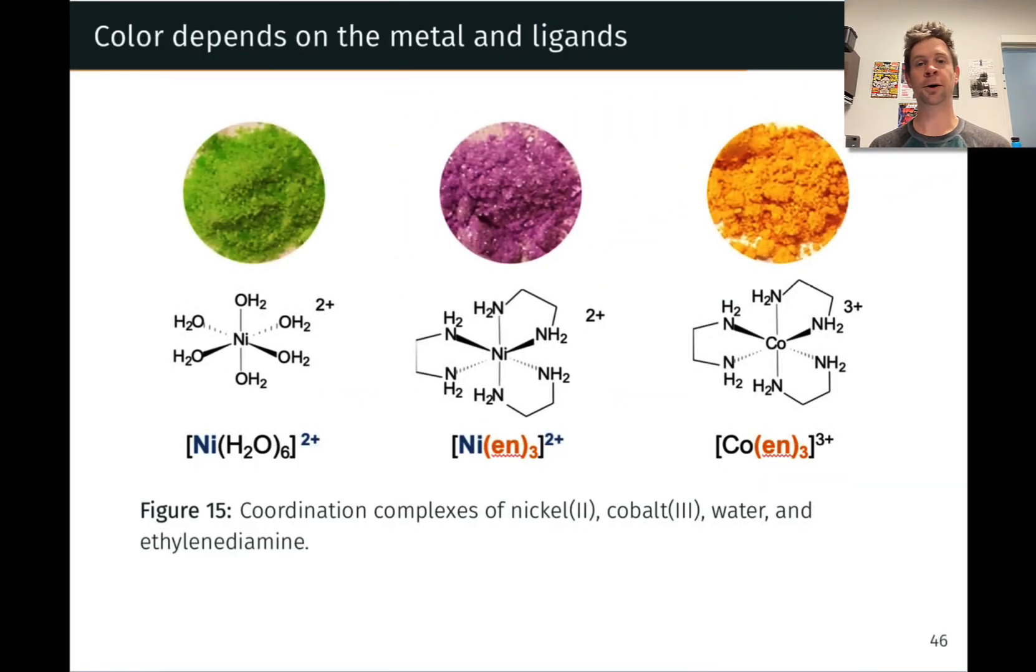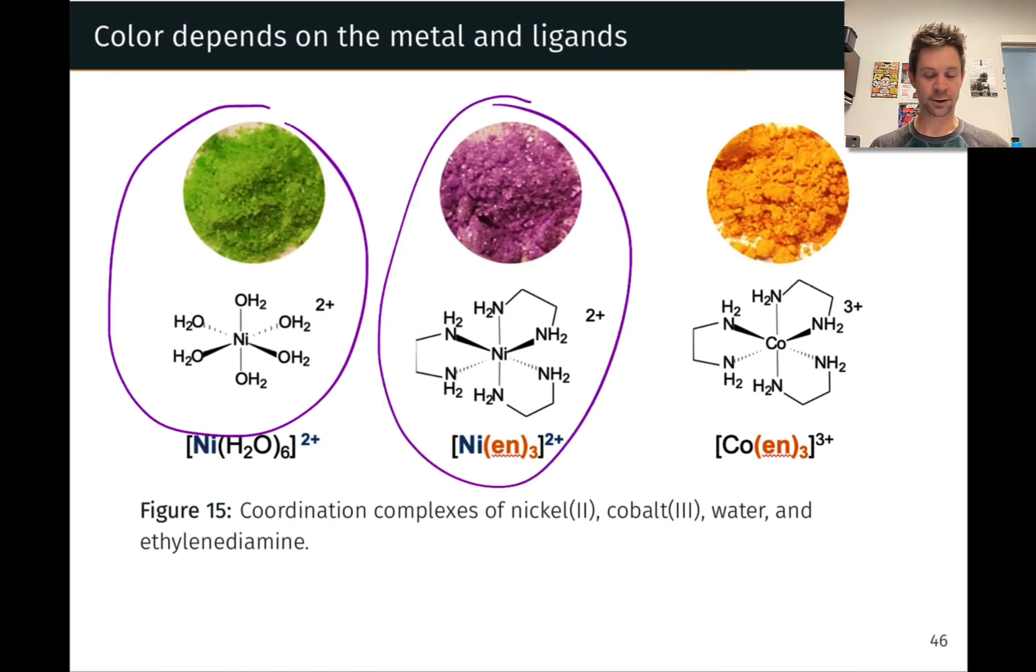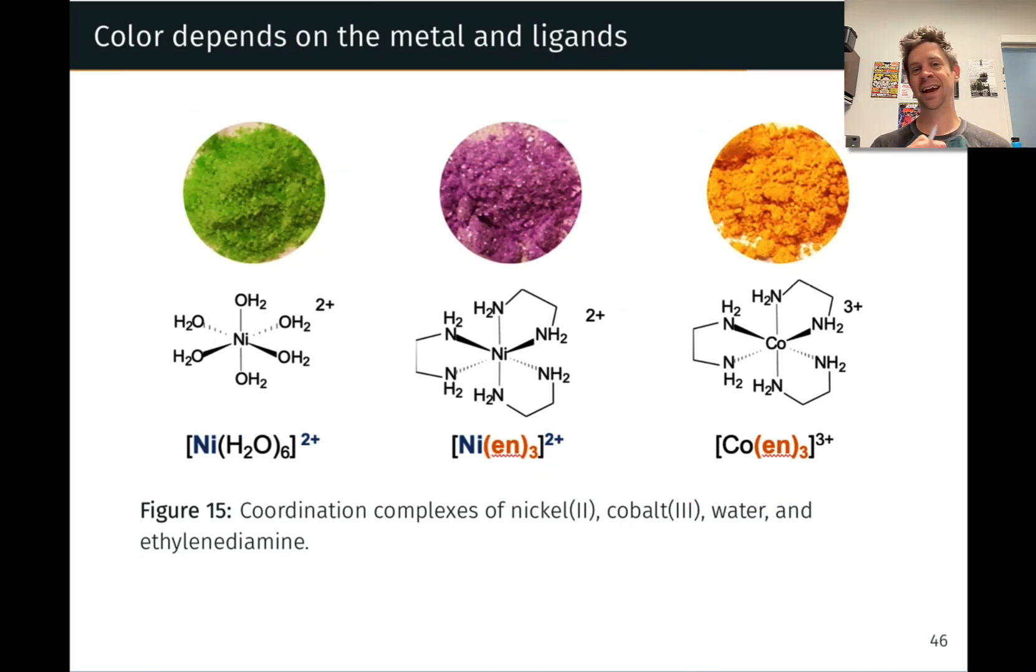This slide shows you how the color of a coordination compound depends on the identity of the metal as well as the ligands. For example, hexa-aquonickel-2, which is here on the left, is a nice green color. If you replace the water ligands with ethylenediamine ligands, you get this complex, which is a nice-looking purple. And if you trade out the nickel-2-cation for the cobalt-3-cation, you get this cobalt complex, which is an orange color. Clearly, color depends on the identity of the metal and the ligands, and crystal field theory is going to enable us to explain why these colors differ.